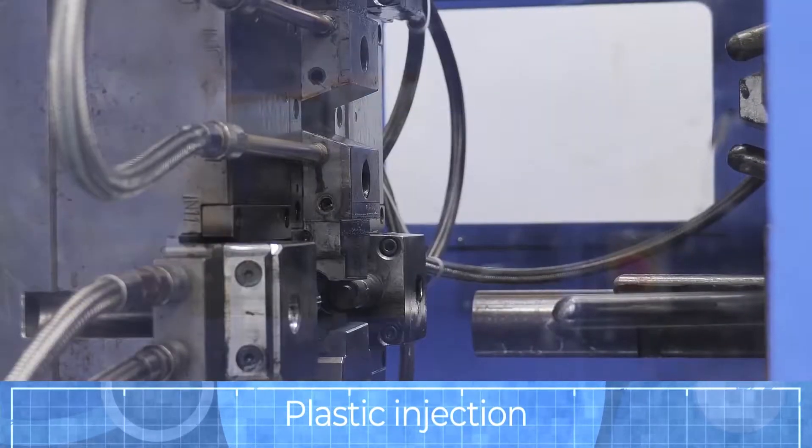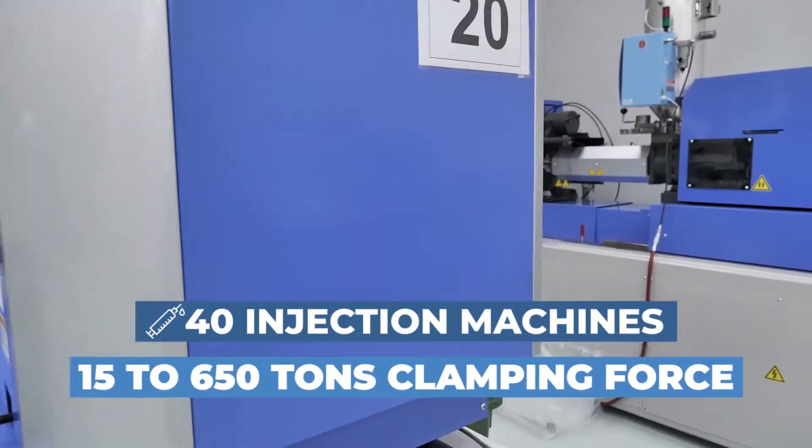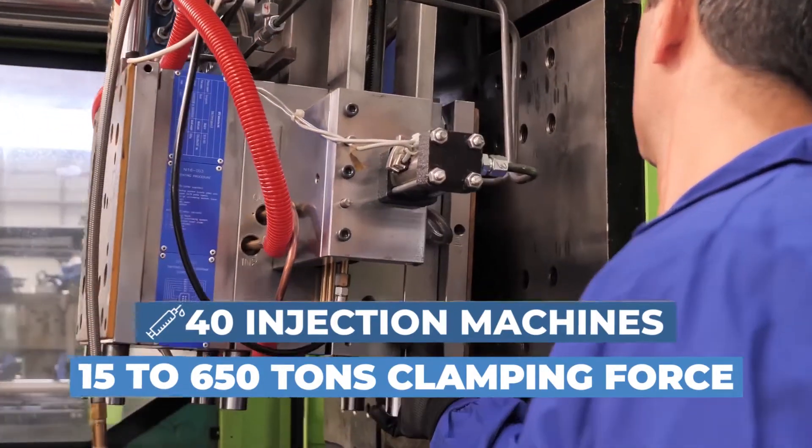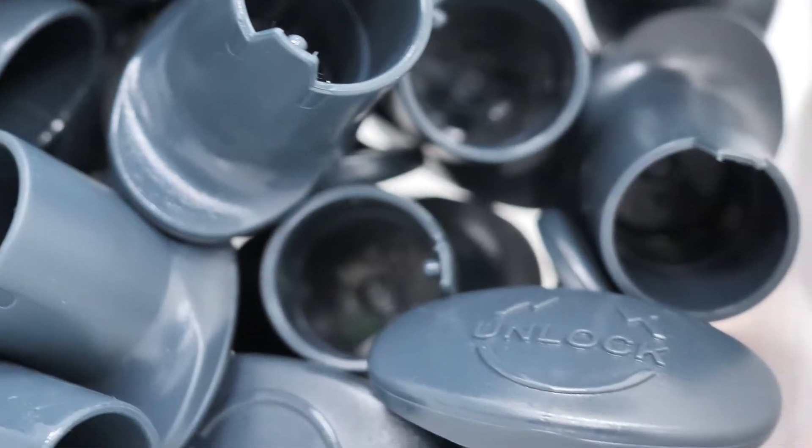We produce assemblies with small and high-volume production. We own more than 40 plastic injection machines ranging from 15 to 650 tons of clamping force. We use just about every polymer one can imagine.